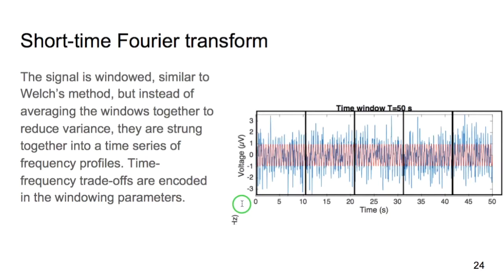So first, the short-time Fourier transform, this is, I think, the easiest to understand. It is very similar to Welch's method, which we covered in the last lecture. So we have our data, we cut it into windows, we perform the FFT on each window. But instead of averaging together to reduce variance, we concatenate them to form a time series. These windows are most often overlapping, but they don't have to be. And they often have window functions applied to them, like the Hann function.